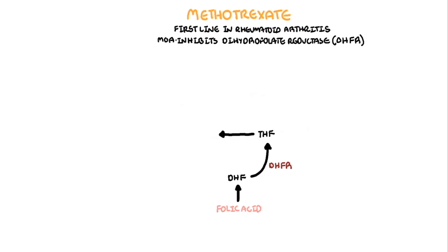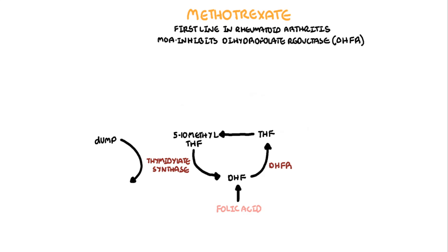Tetrahydrofolate is converted to 5,10-methylenetetrahydrofolate, which through the enzyme thymidylate synthase becomes dihydrofolate again. This is a double reaction because thymidylate synthase also converts dUMP to dTMP in the process, and dTMP through a series of reactions eventually makes thymine, which is part of the nucleotide required for DNA synthesis.